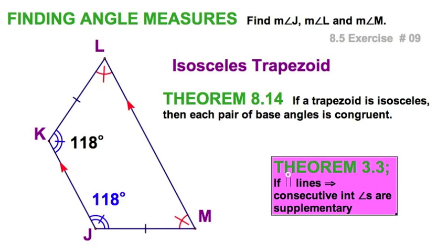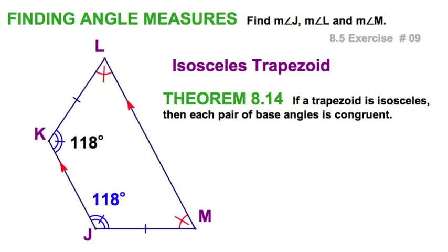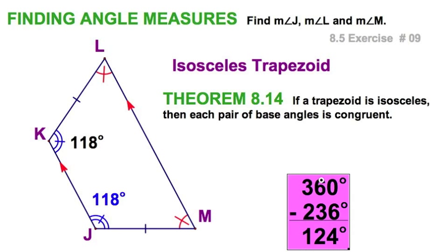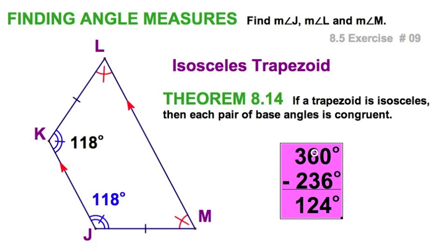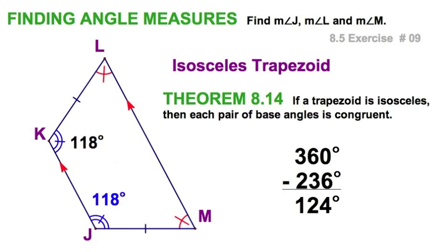Suppose I didn't want to use that theorem. I could just say: quadrilateral, 360 degrees. I'd take away the two 118s, I've got 124 left, divide that by two, and you've got 62.